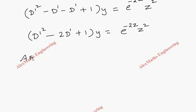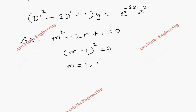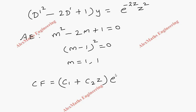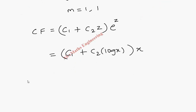As the first part of solving, we write the auxiliary equation: m² minus 2m plus 1 equal to 0, which is (m minus 1)² equal to 0. From this we get two values for m, both equal to 1. Using this we write the complementary function as CF equal to (c1 plus c2·z)·e power z, and replacing z with log x, CF equals (c1 plus c2·log x)·x.